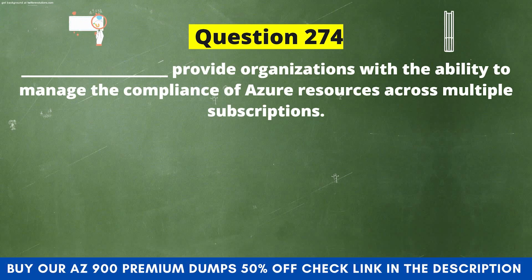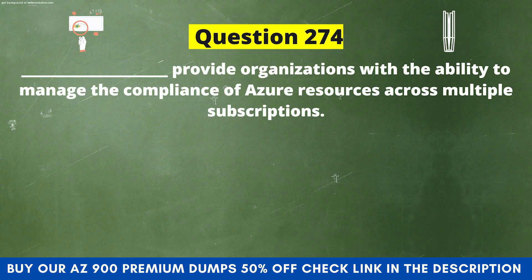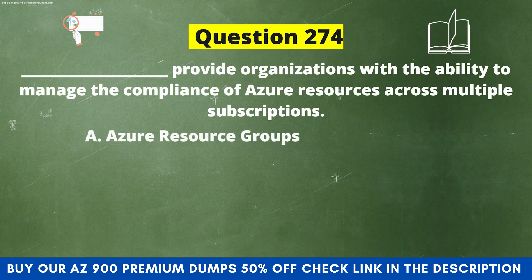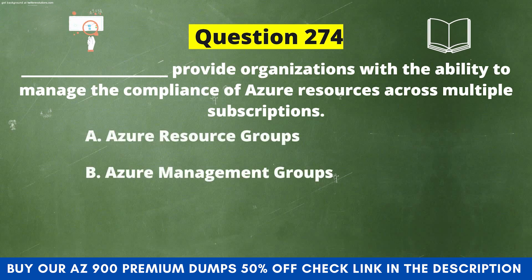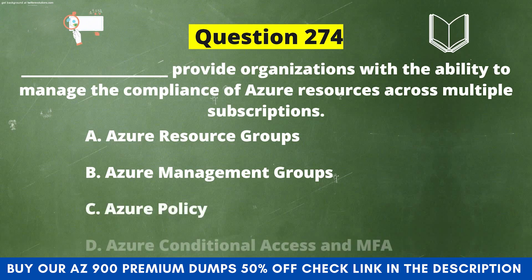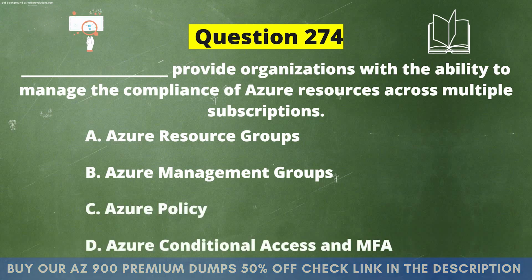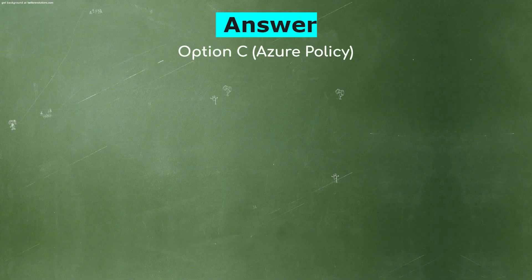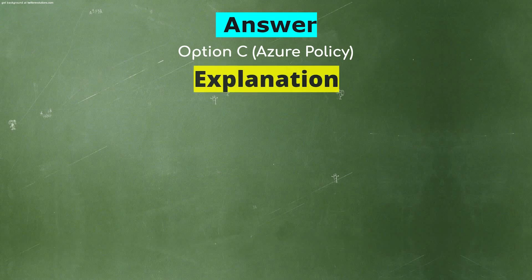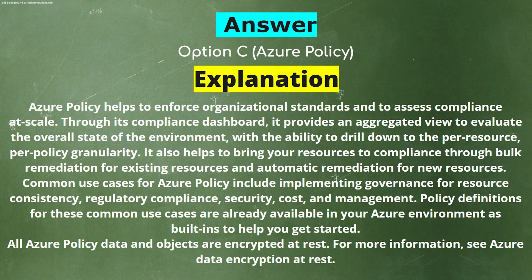Next question: Dash provides organizations with the ability to manage the compliance of Azure resources across multiple subscriptions. The options are: A) Azure Resource Groups, B) Azure Management Groups, C) Azure Policy, D) Azure Conditional Access at MFA. The correct answer is option C, Azure Policy.